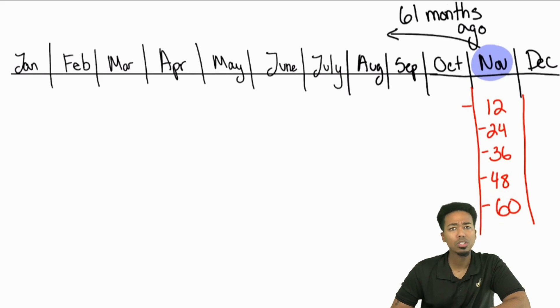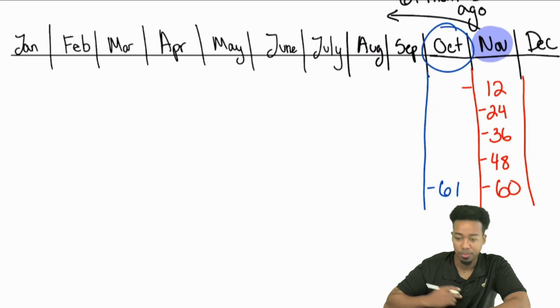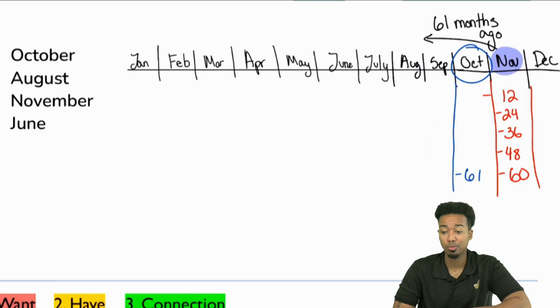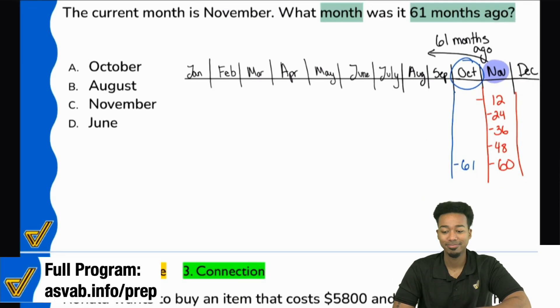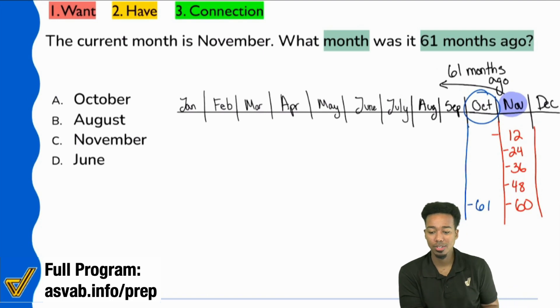Yeah, we just need to go one more month back. And what happens when we go one more month back? Right here. Minus 61. That is October. That falls on October. Right there. Did that blow anybody's mind in terms of how straightforward that could be? Did that blow anyone's mind in terms of how simple that can be?